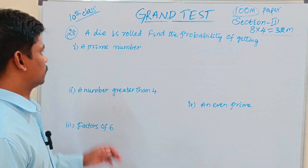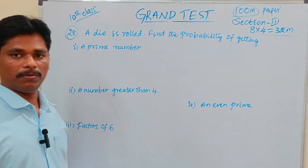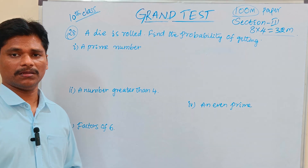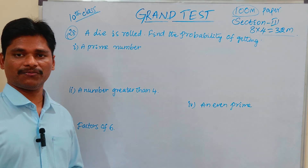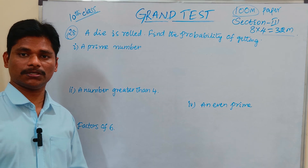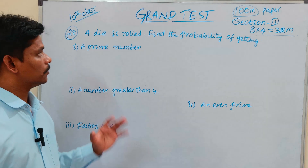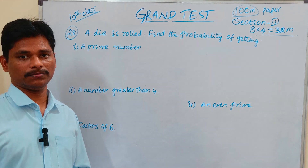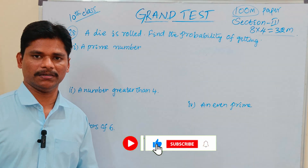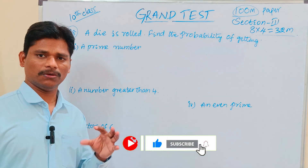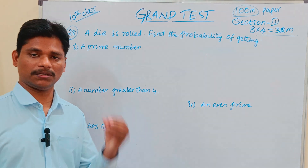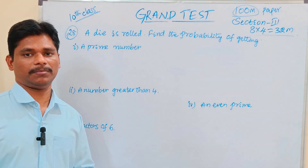Next question. This is a probability based question. Probability topics include dice or pack of cards. Pack of cards will take 5 marks questions, and dice and coin questions are 4 marks questions. Probability is a small chapter and the easiest chapter.